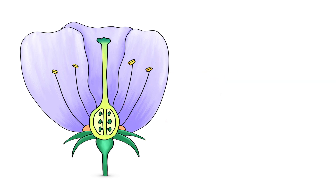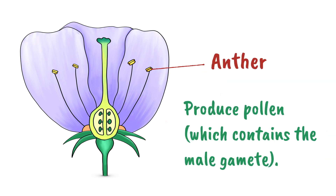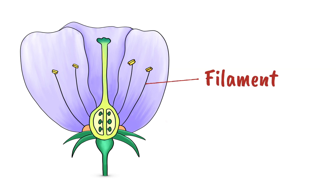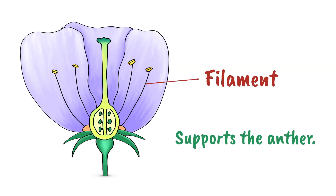At the top of each stamen is the anther. The function of the anther is to produce pollen, which contains the male gamete — the male reproductive cell. This long thin structure is called the filament and it supports the anther.